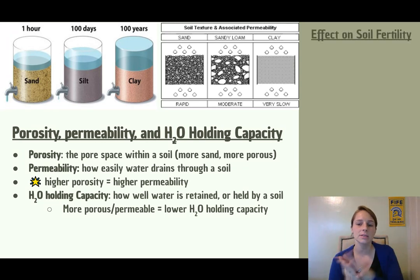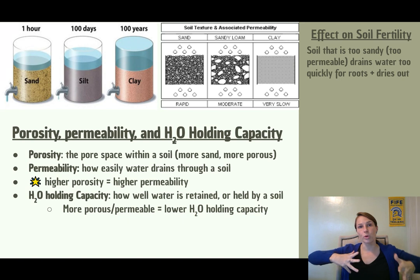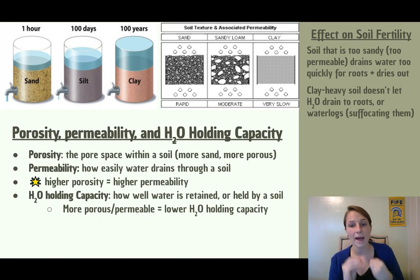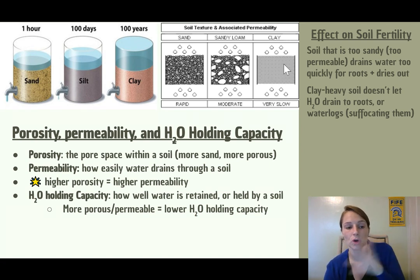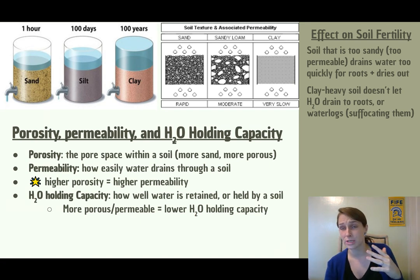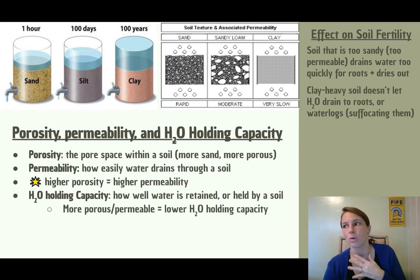This matters because it affects soil fertility. Soil that is too sandy and too permeable drains water too quickly for roots — those roots dry out and the plant dies. On the other side, soil that is too clay-heavy is really tightly packed, so you don't have much porosity or permeability. Water either can't get in at all, or if it does, it doesn't drain, causing roots to become waterlogged and suffocate, which also kills the plant.